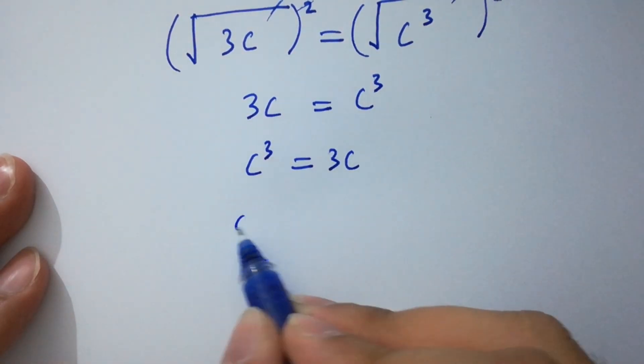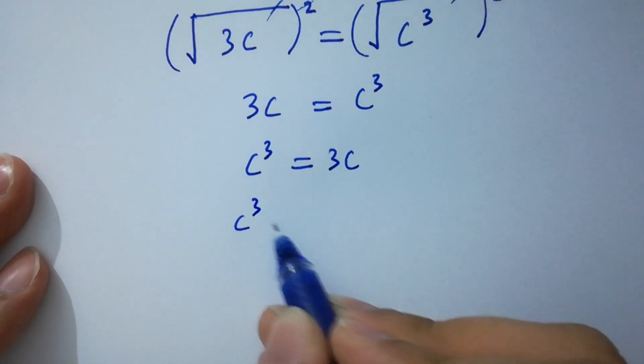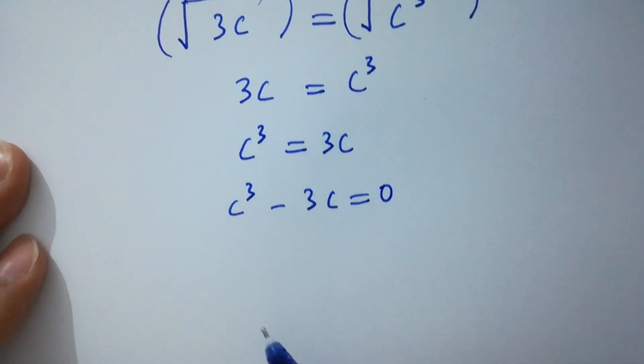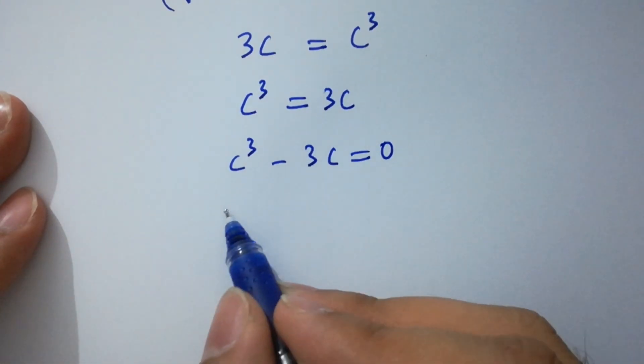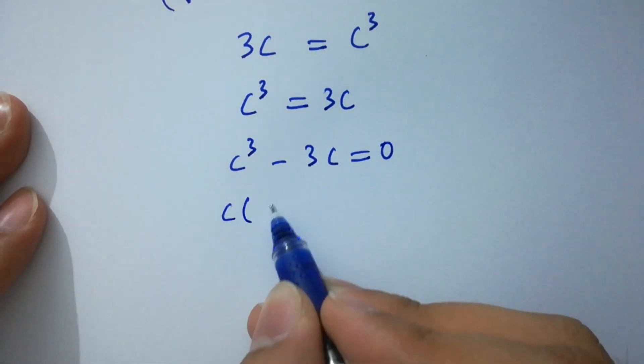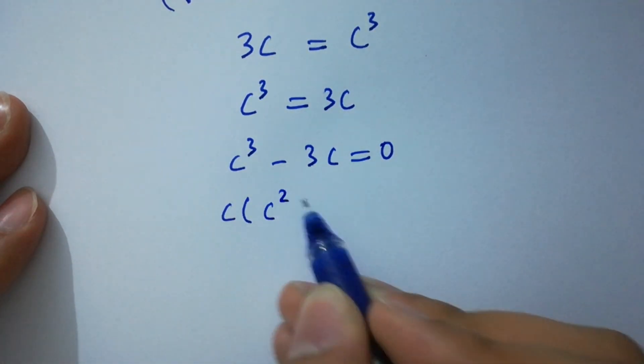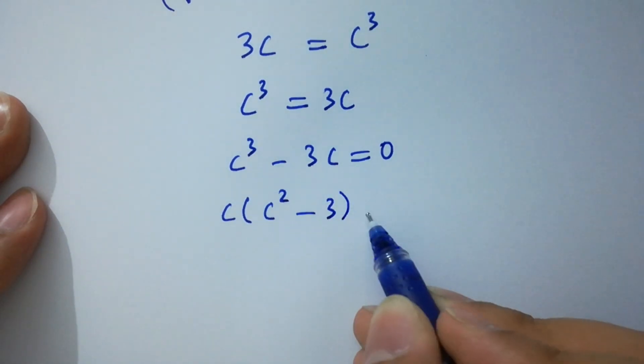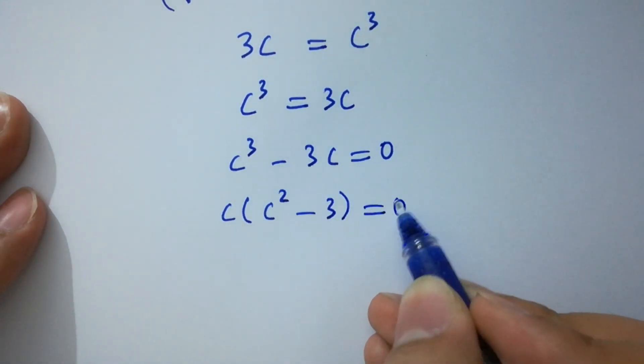c cubed minus 3c equals 0. Taking c as common, we have c times the quantity c squared minus 3, equal to 0.